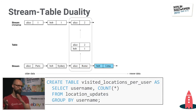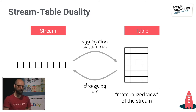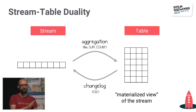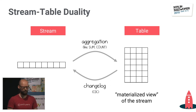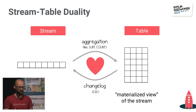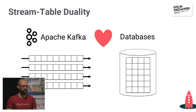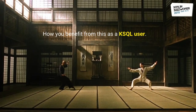There is a clear relationship: stream as a table as a stream as a table. The core realization is — if you have a stream, you get to a table by aggregating it: counting, summing, top-K analysis, and so on. And if you have a table, you get back the stream by looking at the changelog of that table. That's why these two are two sides of the same coin, and why Apache Kafka and databases are so closely related. This is the idea of turning the database inside out.